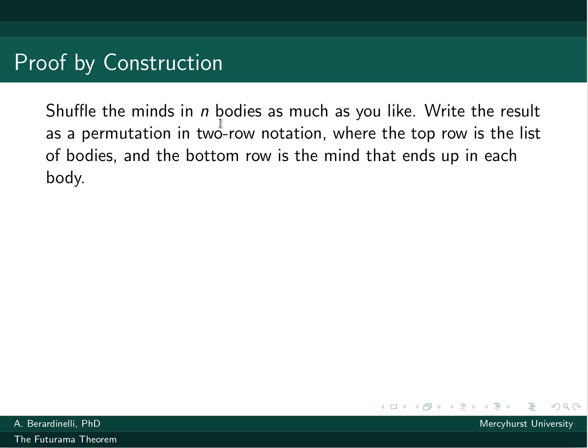Well, first thing we do is we do the shuffle. And then what we're going to do to build this solution is we're going to put a little math into it. So we're going to write that shuffling as a permutation in two-row notation, just like what we talked about in yesterday's lectures. And the top row is just going to be the list of bodies. And the bottom row is going to be the mind that ends up in that body at the end.